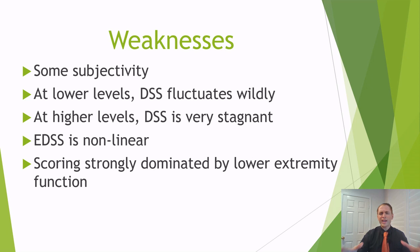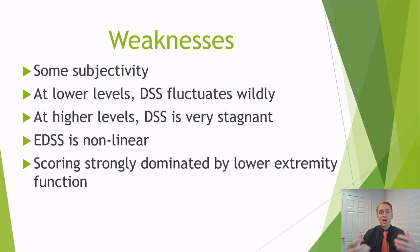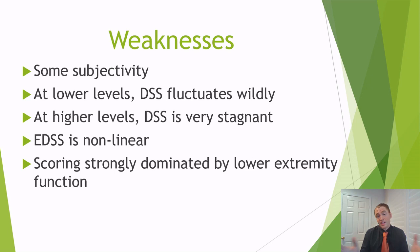The scoring is strongly dominated by function of the lower extremities, particularly at lower and middle levels. For instance, someone who works 80 hours a week as a CEO but walks with a cane due to imbalance versus someone who walks with a cane but also has dementia and blindness — they both have the exact same score of 6.0. Increasingly we understand that cognitive function, fatigue, and factors other than lower extremity function are very important. And because the EDSS is so discrete and difficult to change, it's hard to show a benefit in clinical trials, causing drug companies to exclude people with higher disability.